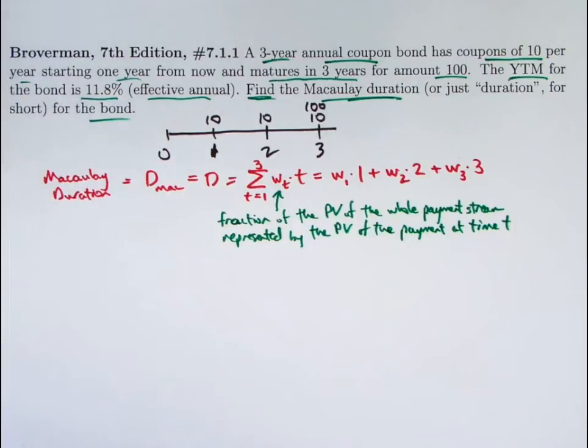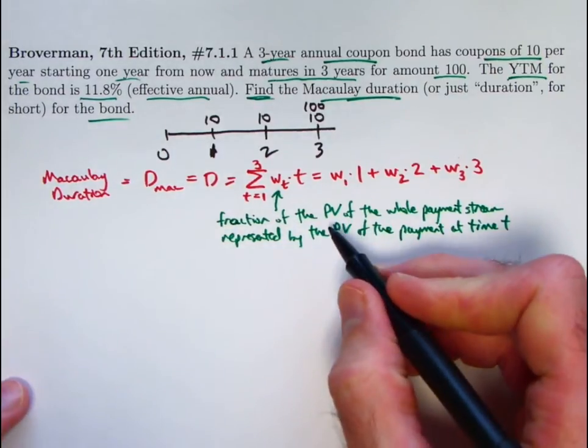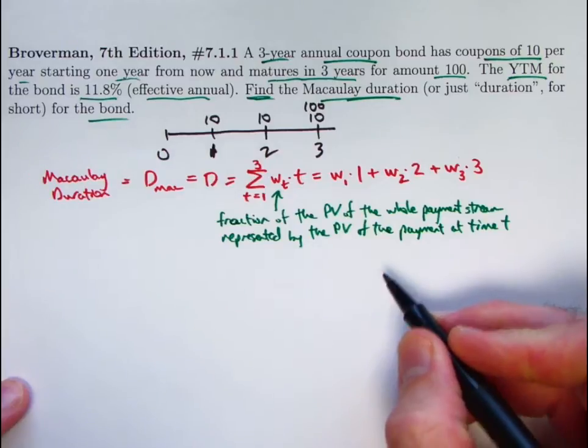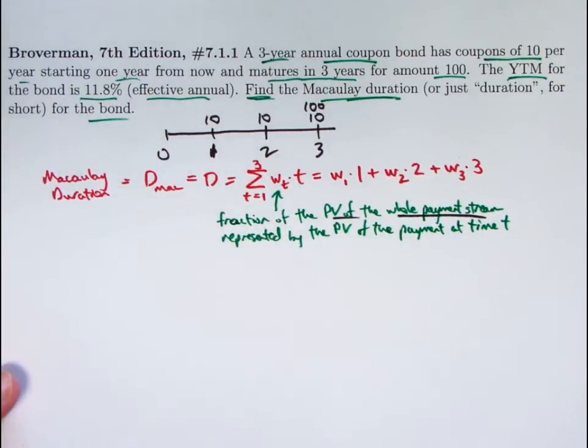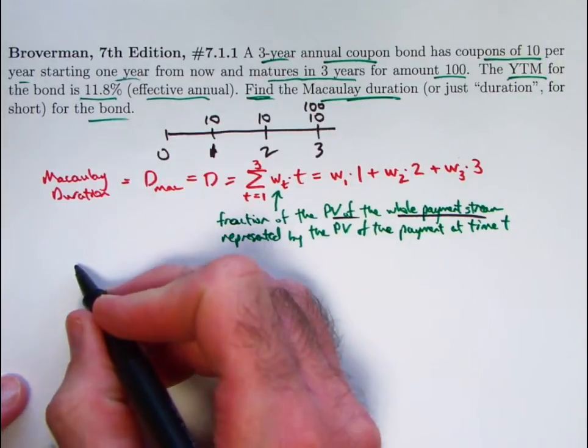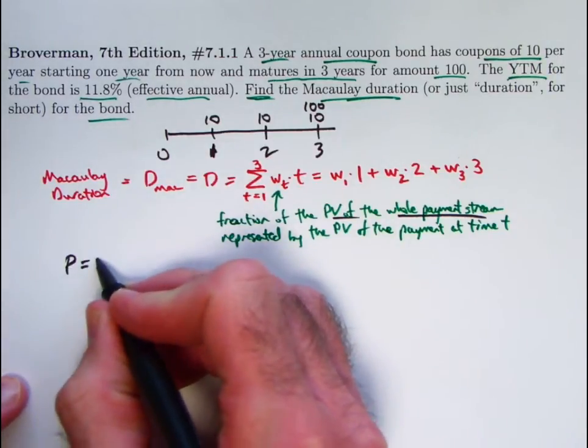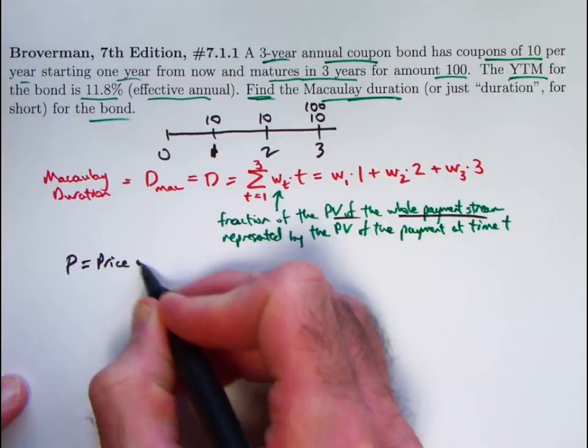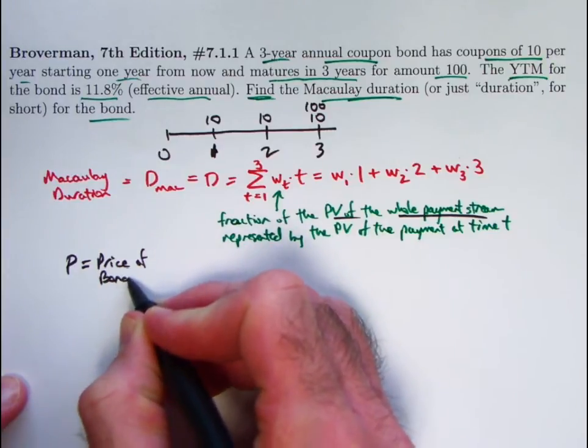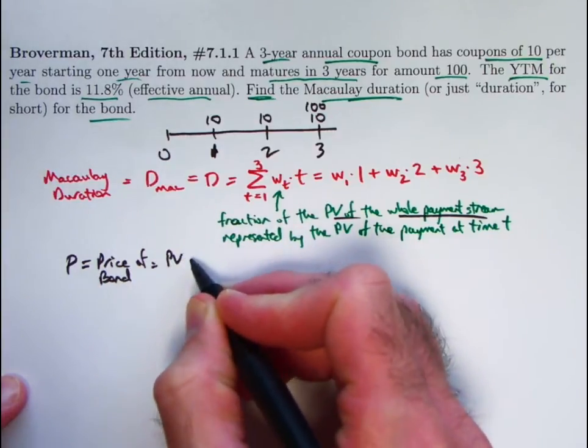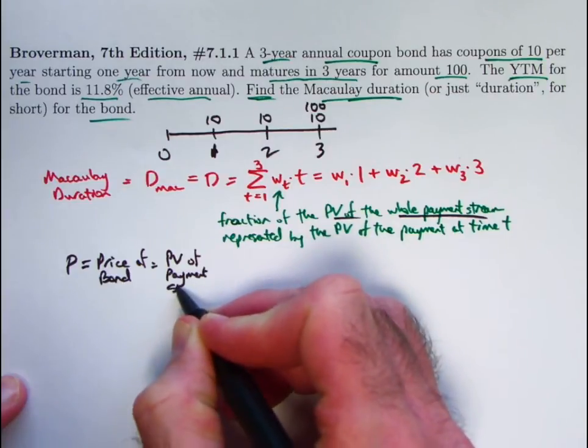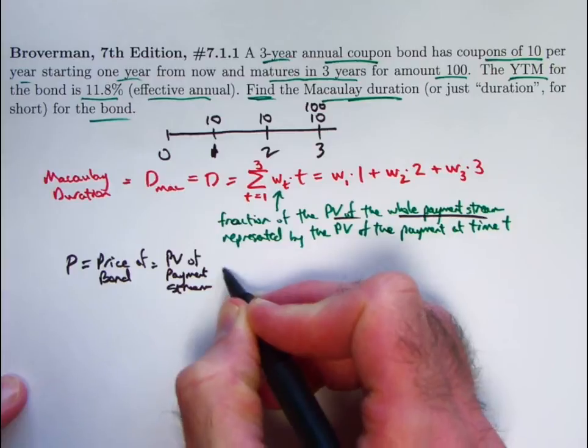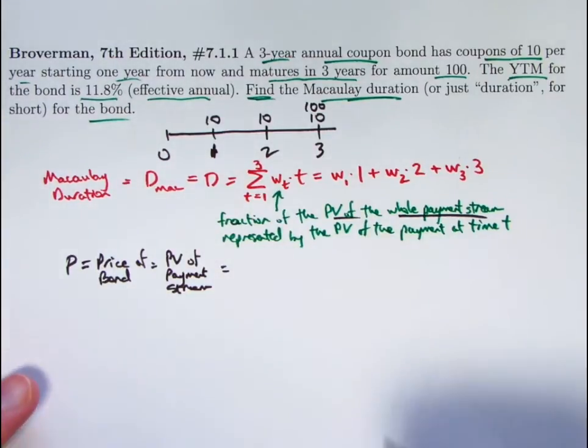So we have to calculate these W's. What are the denominators of the W's? They are the same. They are the present value of the whole payment stream, which again is the price of the bond. P is the price of the bond. Price of bond. That is the present value of the payment stream, of the whole payment stream.